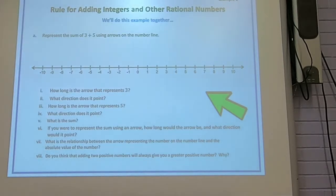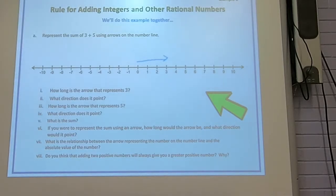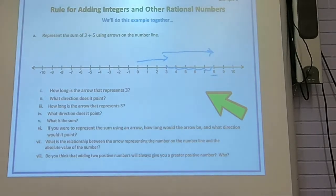We're going to work that problem on the number line. It's positive 3, so I start at 0, take my first vector going to the right with a magnitude of 3. Then I'm adding positive 5, so I need to count to the right again: 1, 2, 3, 4, 5. My arrow ends right here and my answer is 8.